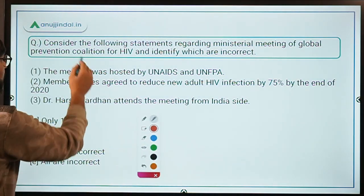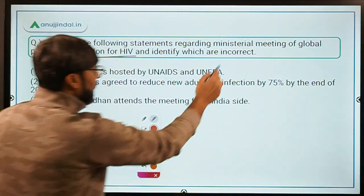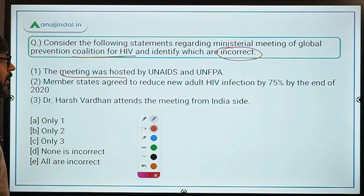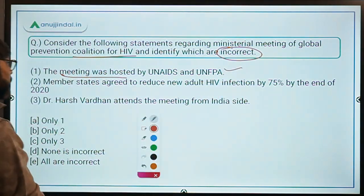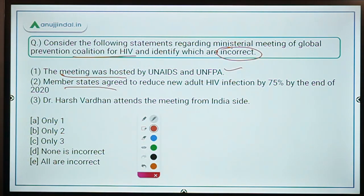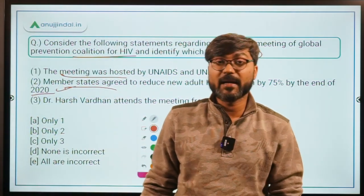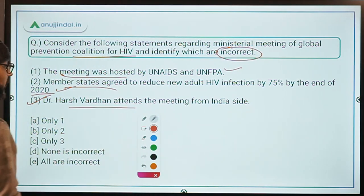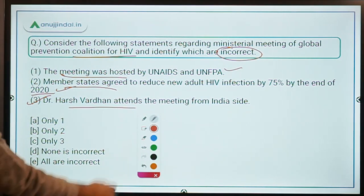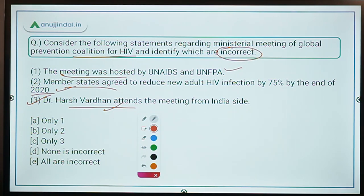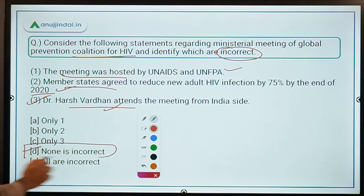Evaluating the statements: the meeting was hosted by UN AIDS and UNFPA — correct. Member states agreed to reduce new adult HIV infections by 75% by the end of 2020 — correct. This is in line with the UNGA commitment to eliminate AIDS by 2030 — correct. Dr. Harsh Vardhan attended from India's side — correct. No statement is incorrect, so option D — none is incorrect — is the correct answer.